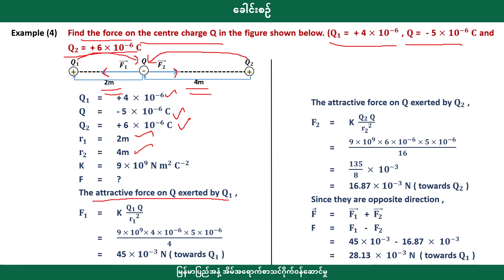The result gives 45 × 10⁻³ Newtons. The attractive force on charge two at a point is: F2 = kq1q2 / r₂². The result is 16.87 × 10⁻³ Newtons, since the forces are in opposite directions.